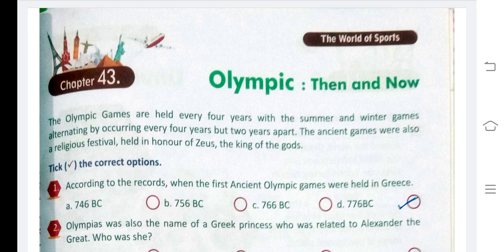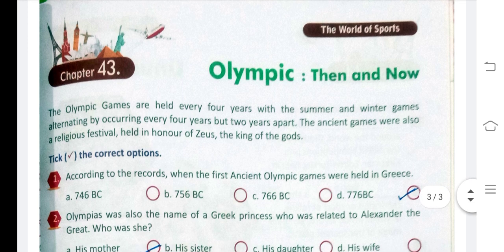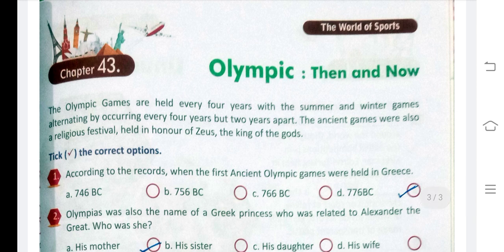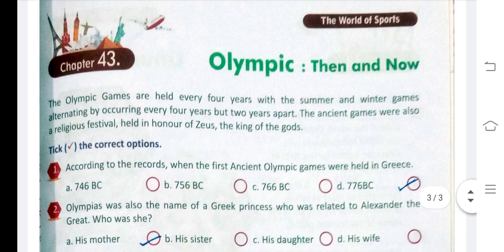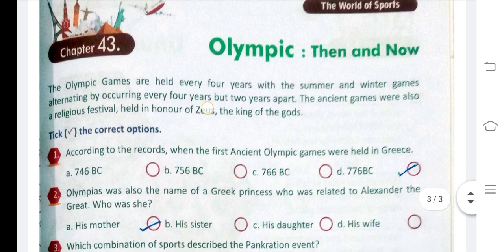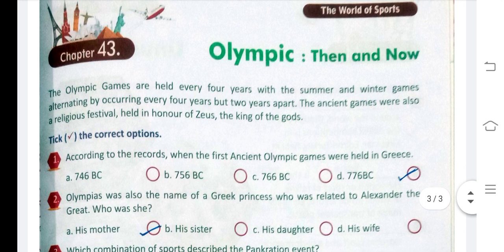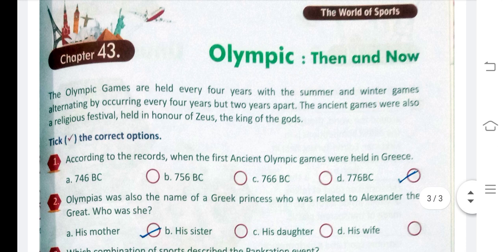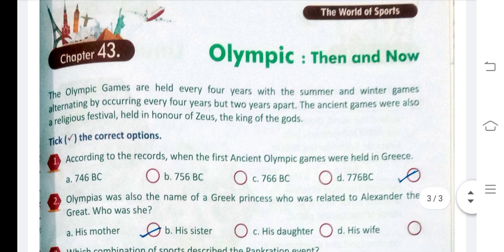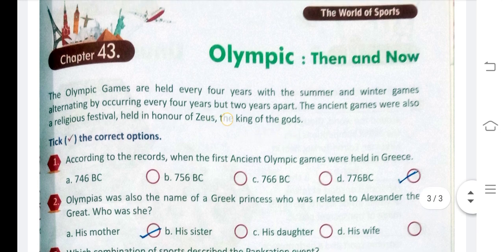Now let's start chapter 43, that is 'Olympics: Then and Now.' The Olympic Games are held every four years, with the summer and winter games alternating, occurring every four years but two years apart. The ancient games were also a religious festival held in honor of Zeus, the king of gods.